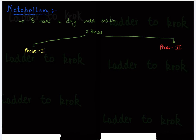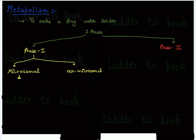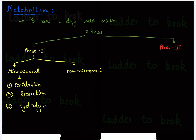In phase one, most of the reactions are catabolic. It occurs with the help of enzymes in two ways: microsomal enzymes and non-microsomal enzymes. Microsomal enzymes carry out different processes: number one is oxidation, number two is reduction, number three is hydrolysis, and many more.